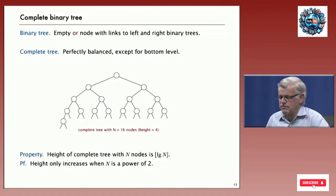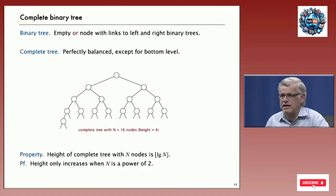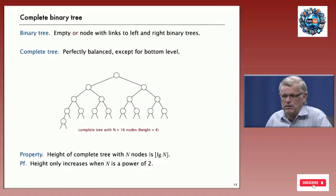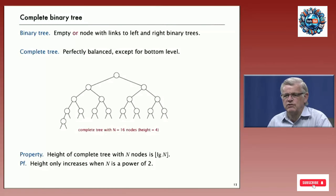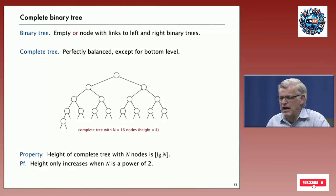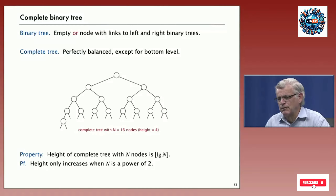The property of a complete tree is that the height of a complete tree with n nodes is the largest integer less than log base 2 of n. That's easy to convince yourself is true because the height, if we add nodes one at a time going from left to right on the bottom level, only increases when n is a power of 2.